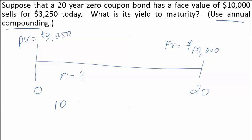Using the future value formula, we can solve for the yield to maturity by rearranging this formula.